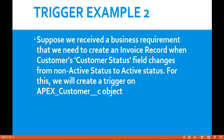So let's take a look at the business requirement. Suppose we received a requirement where we need to create an invoice record when the customer status field changes from non-active status to active status. For this example, I will create a trigger on the Apex customer object. Let's go ahead and do that.